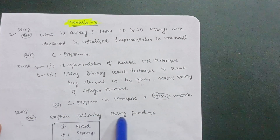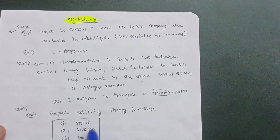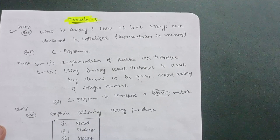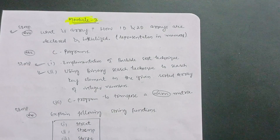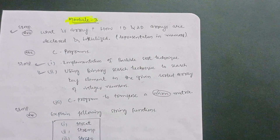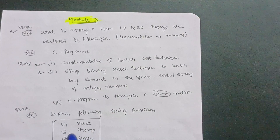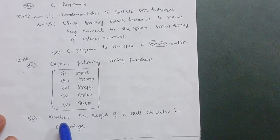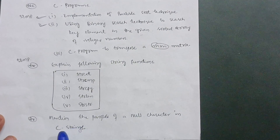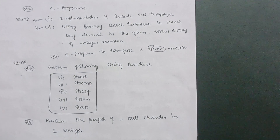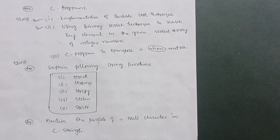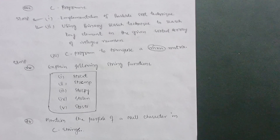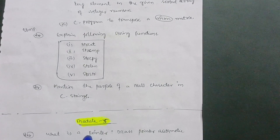Next, explain the following string functions: strcat, strcmp, strcpy, strlen, and string representation in C. These are the most important definitions to go through. Also cover: mention the purpose of a null character in C strings. If there are programs mentioned in the model question paper that you find easy, you can go through those as well.